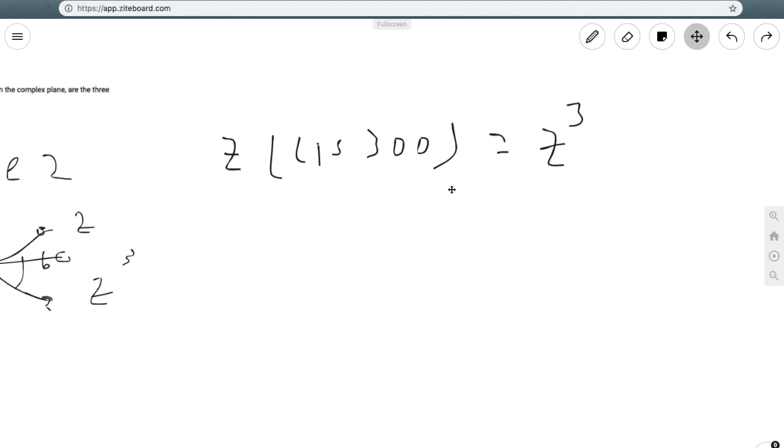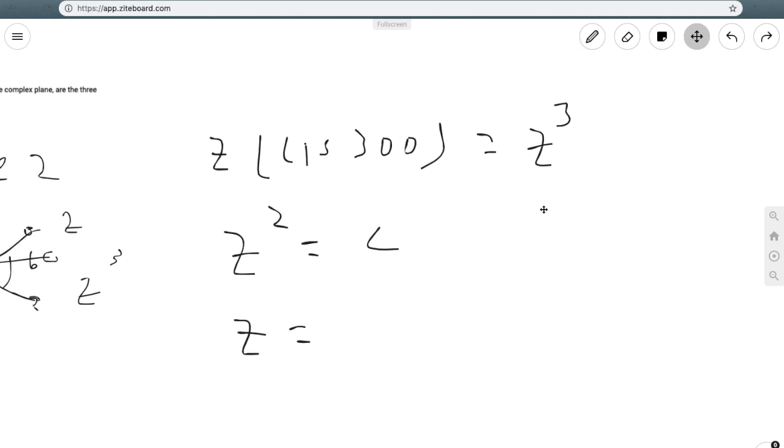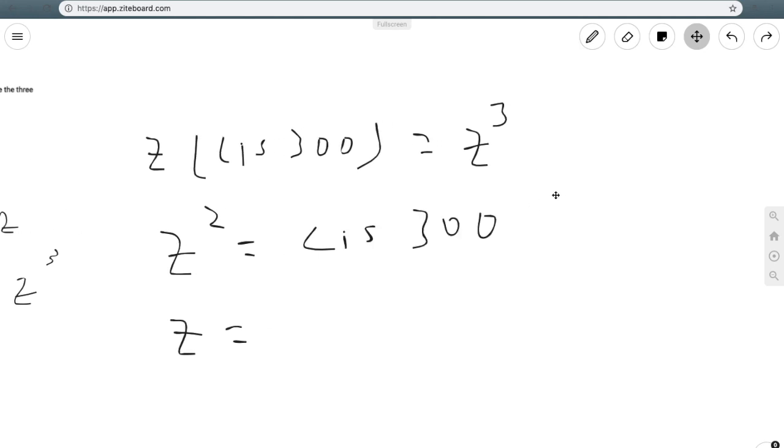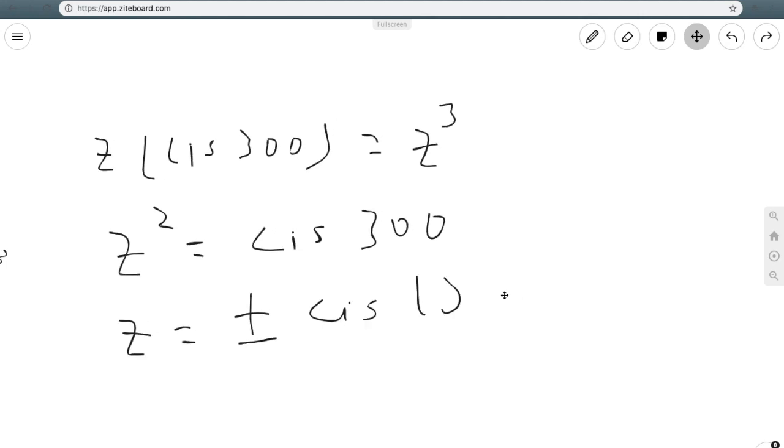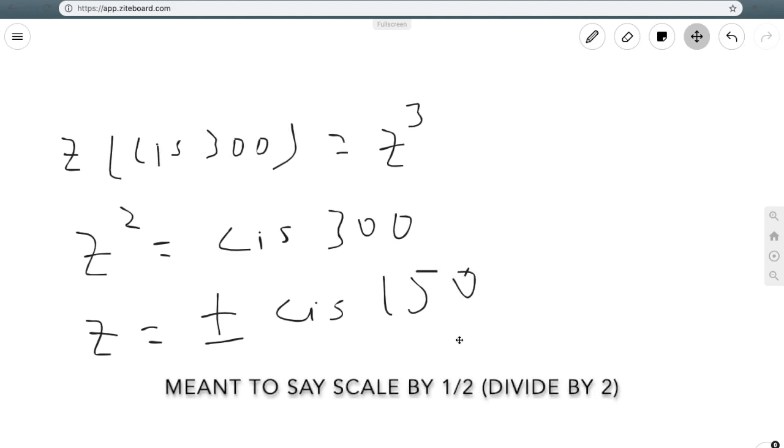So, here I proceed in the same way. I divide both sides by z to get z squared, which equals cis 300. And then, so I can just simplify this to z equals plus or minus cis 150. And, again, the reason this works is because of DeMoivre's theorem, which pretty much tells me that if I'm going to scale it down from 2 to 1, then I'm going to end up dividing it by 1 half.